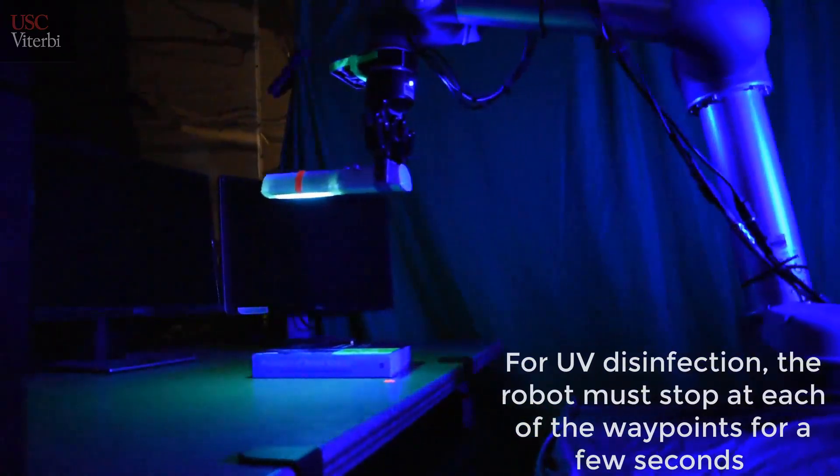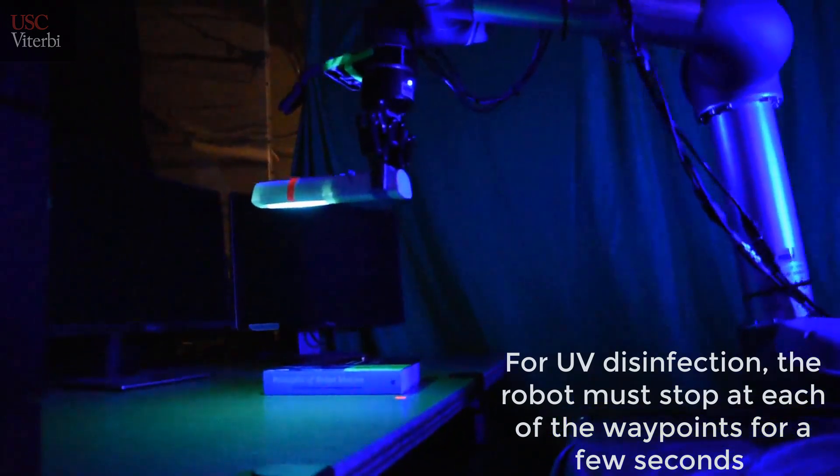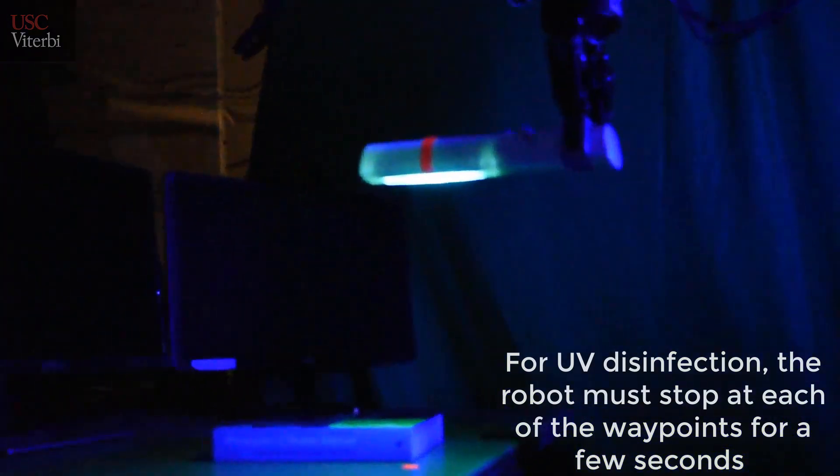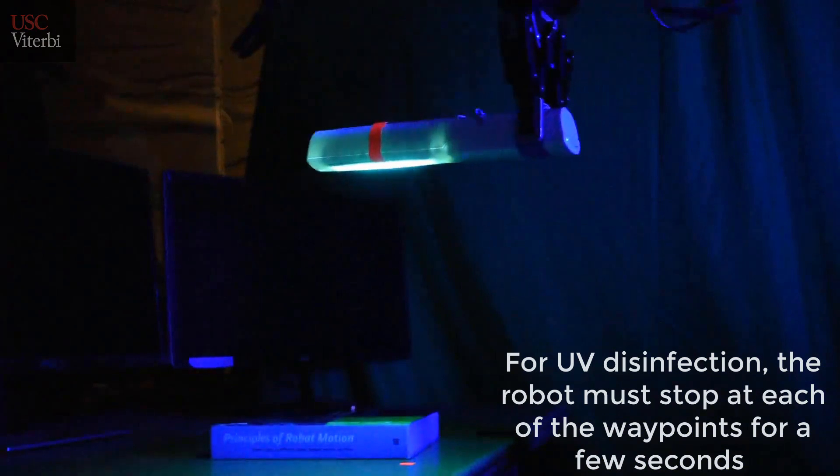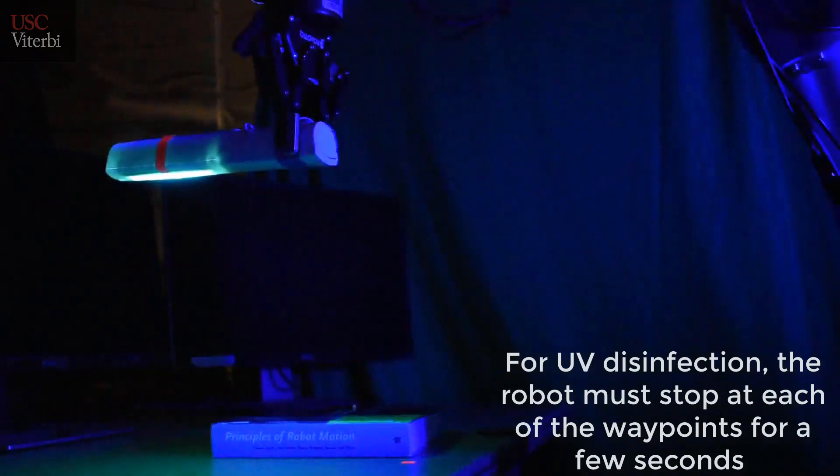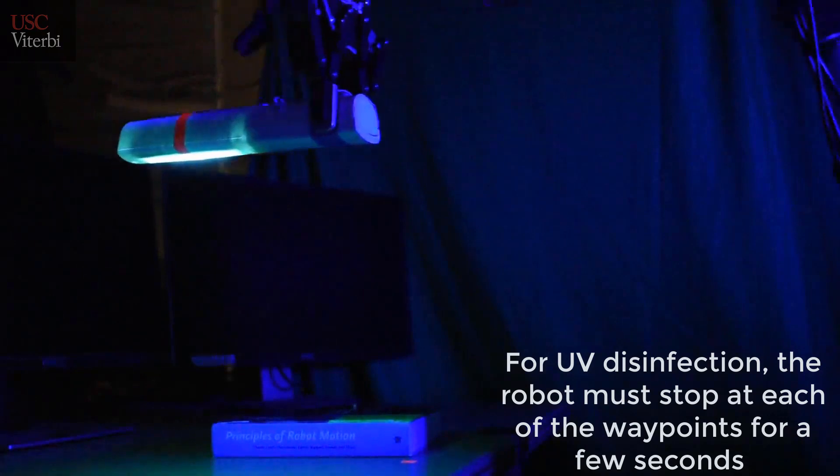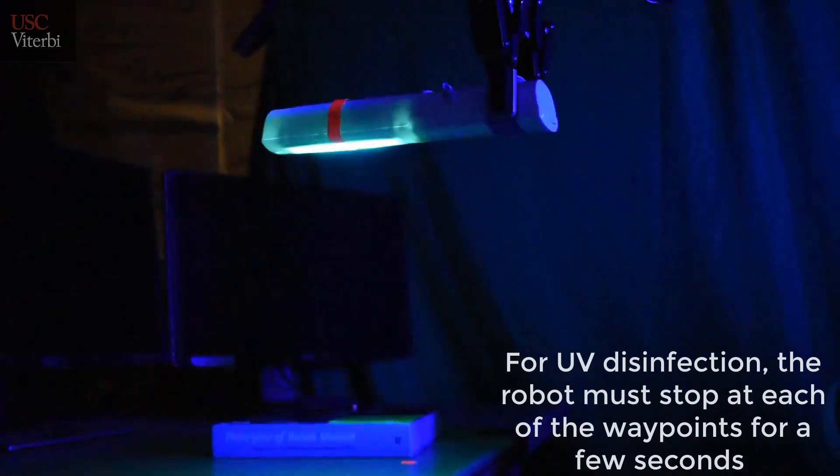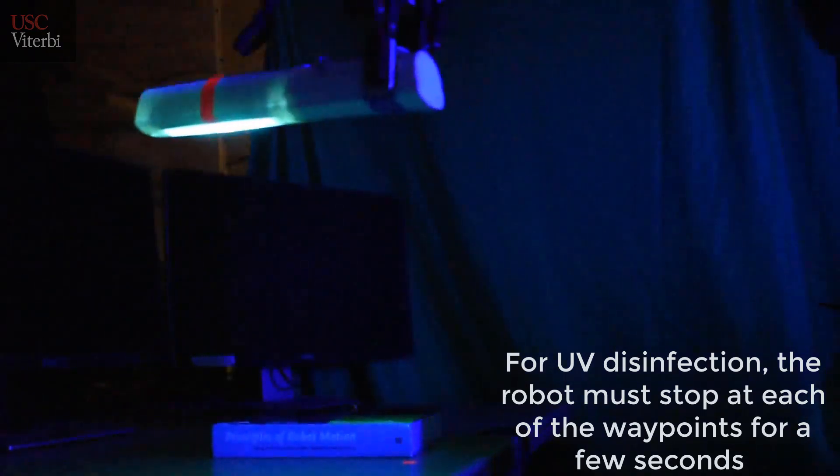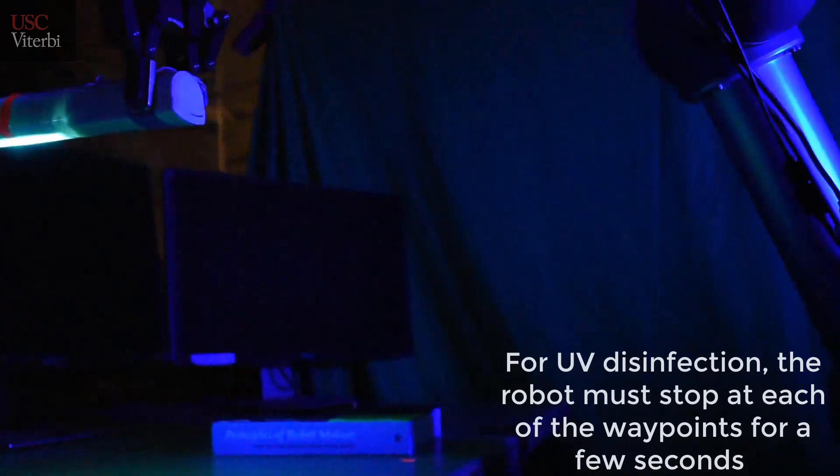UV light is a proven disinfectant. Coronavirus on a surface can be killed when exposed to UV light of appropriate intensity for a sufficient amount of time. A robot can hold a UV wand over a surface and move it at the right speed. The robot can do this task consistently without making any mistake. This task will be physically taxing and risky for humans.